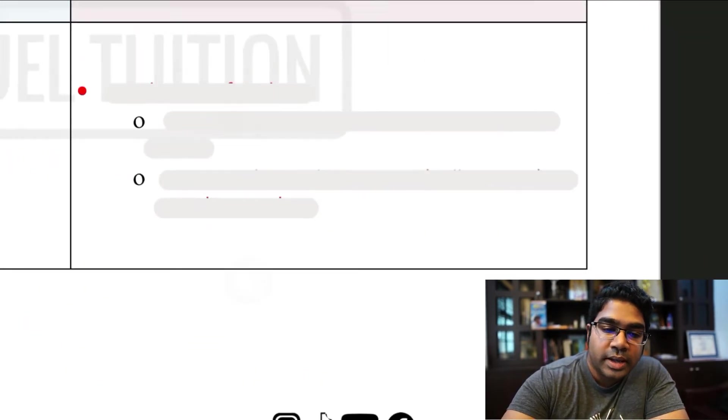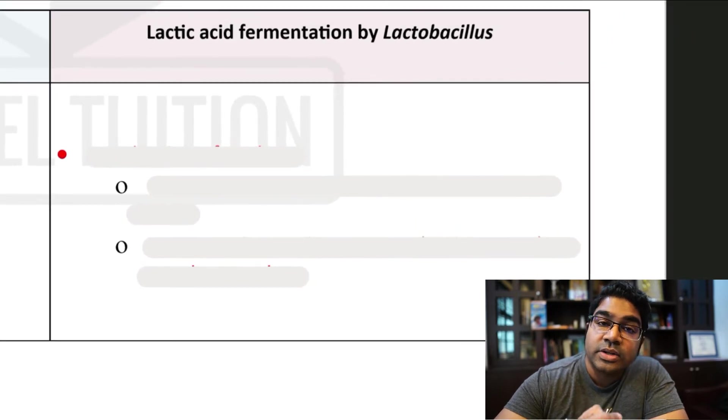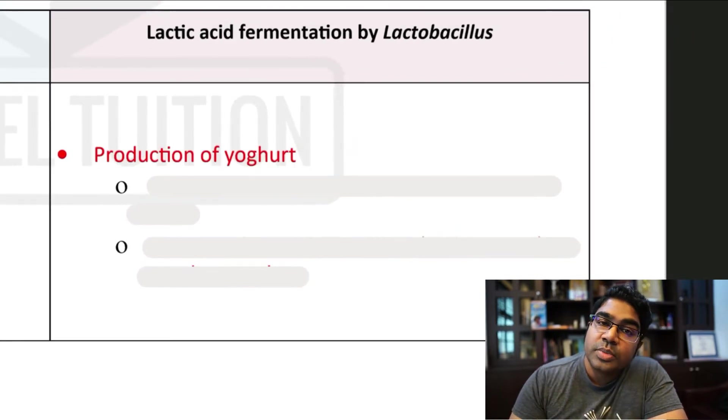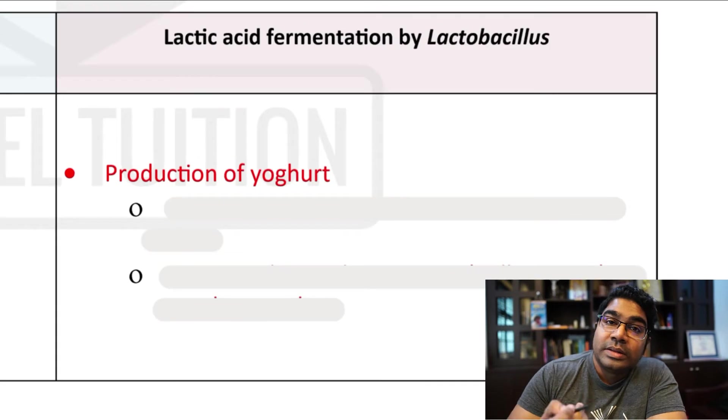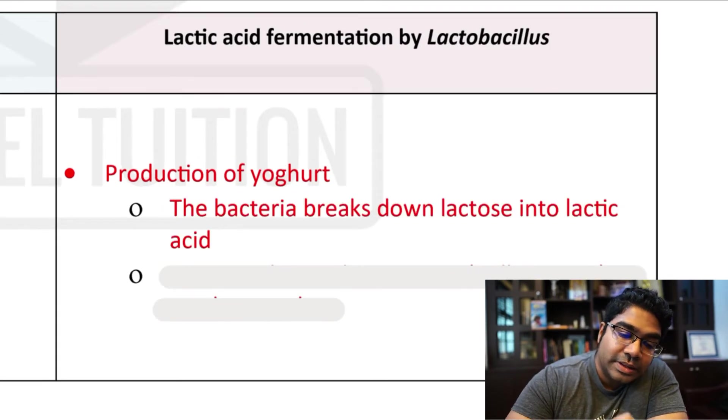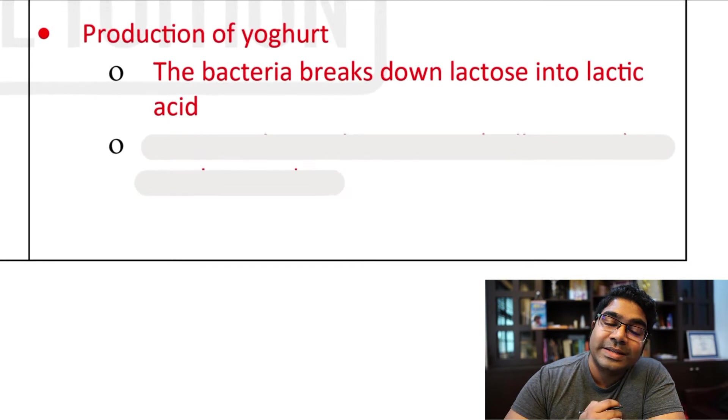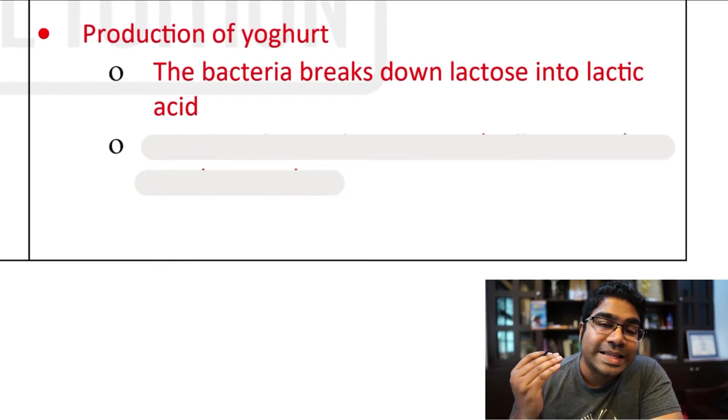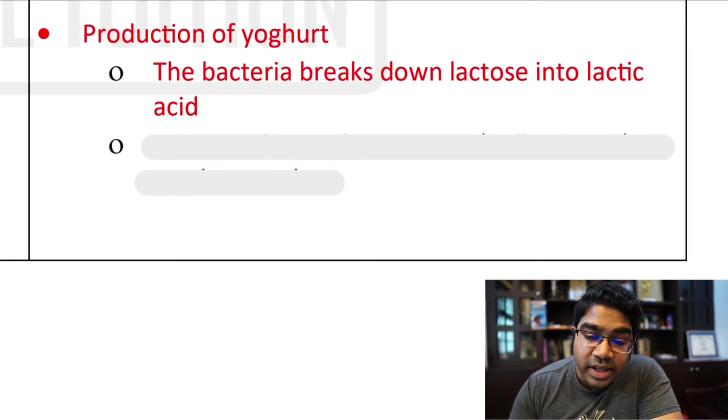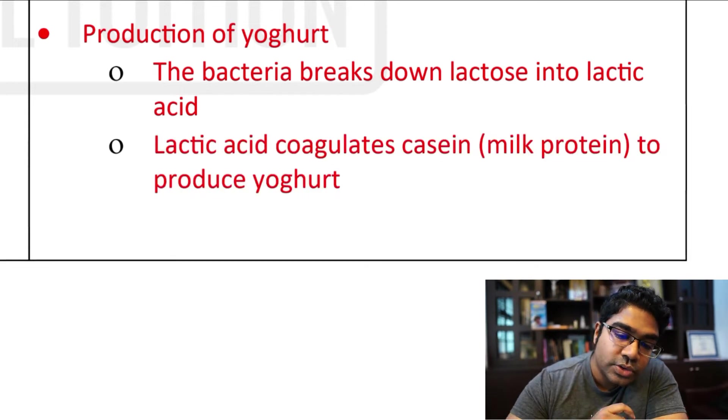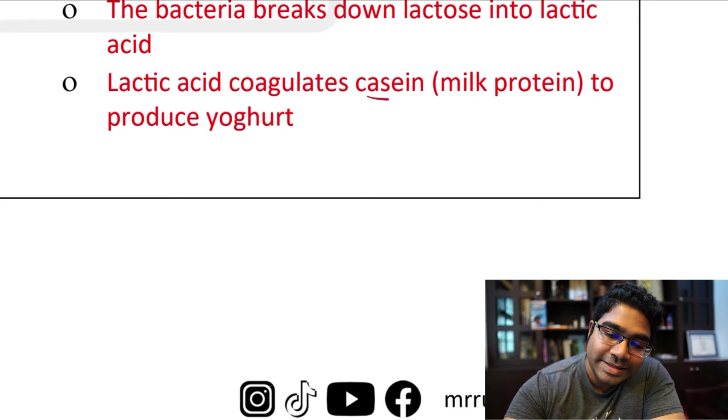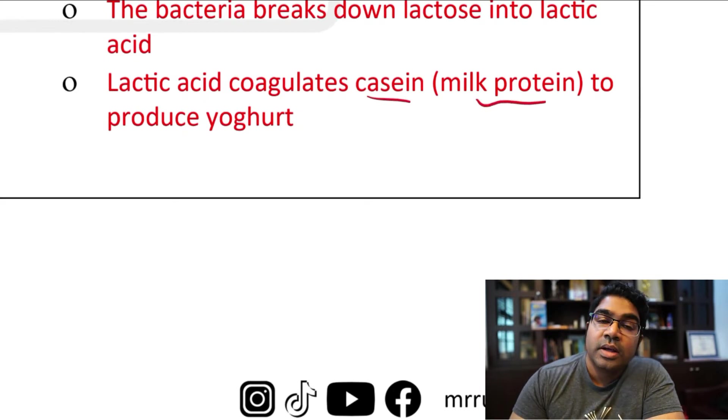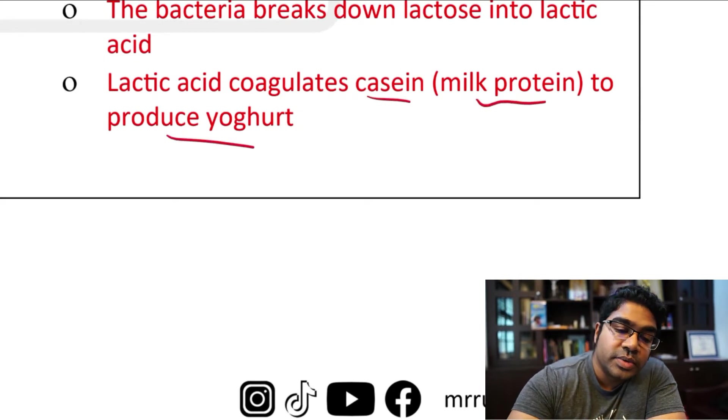Let's look at lactic acid fermentation by lactobacillus. Here it is used in the production of yogurt. This bacteria actually breaks down the lactose in milk into lactic acid and this is the source of the sourness in yogurt because acidic substances have a sour taste. This lactic acid then goes on to coagulate casein which is a milk protein and then finally yogurt is produced.